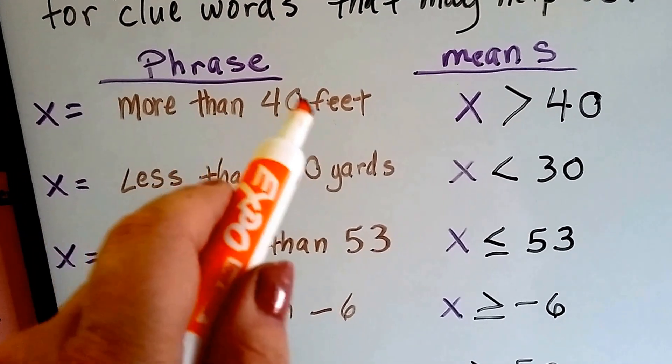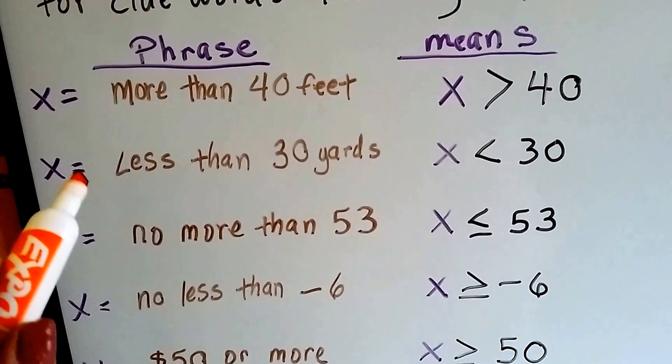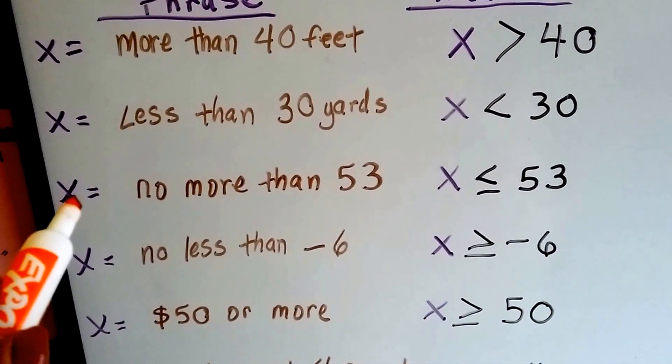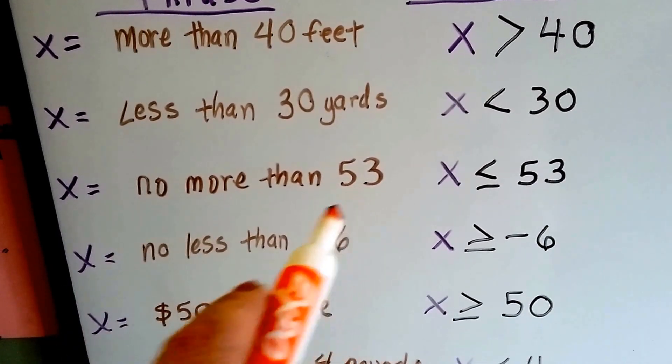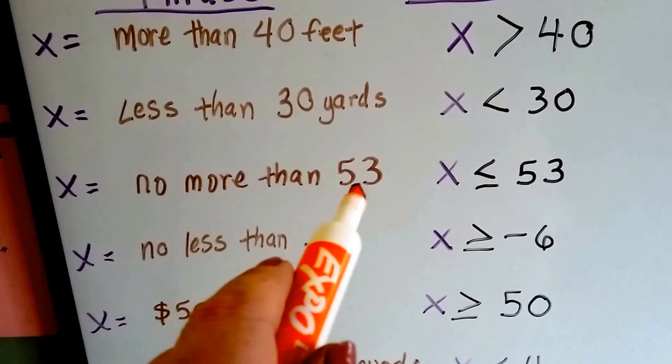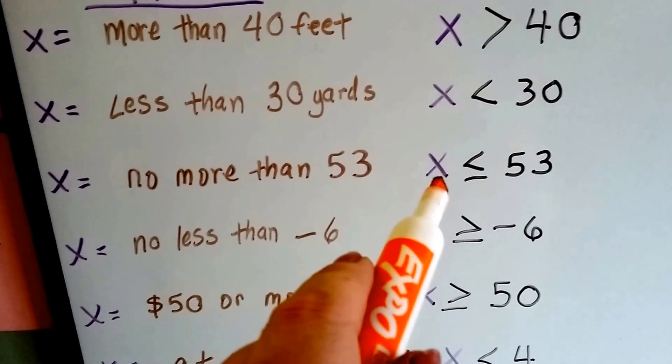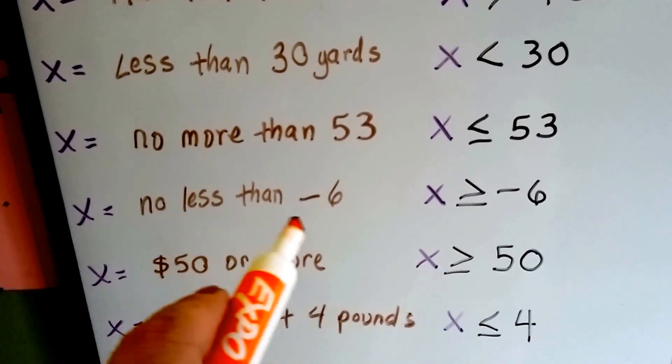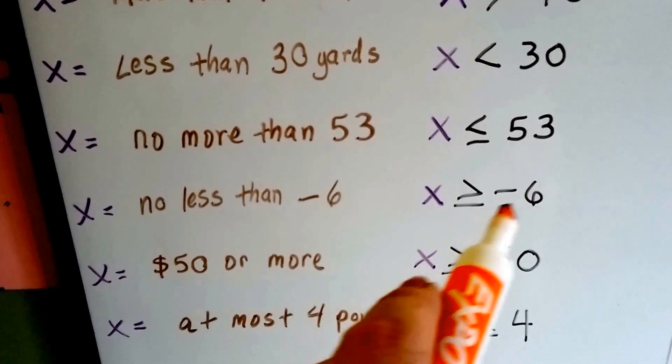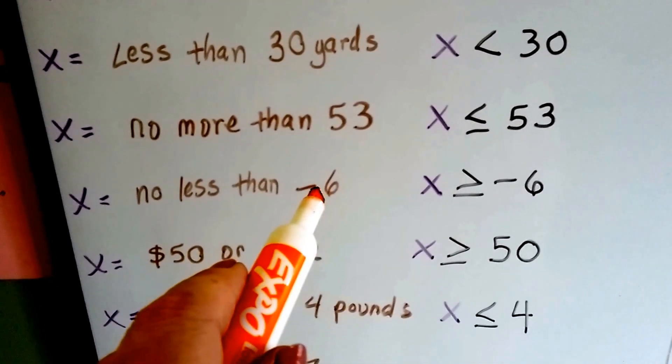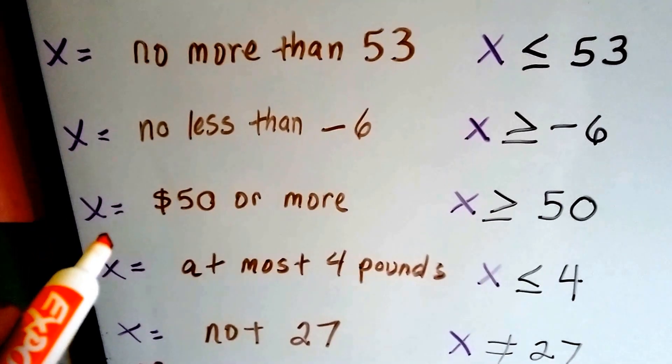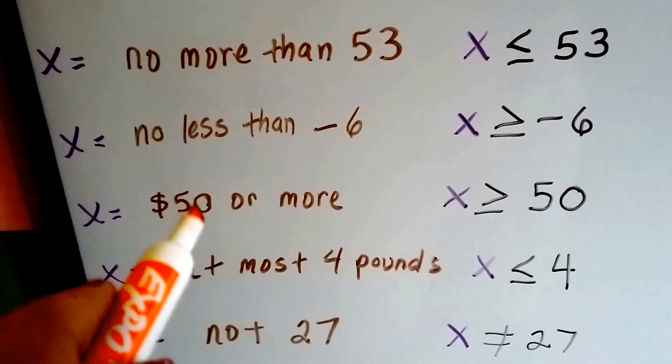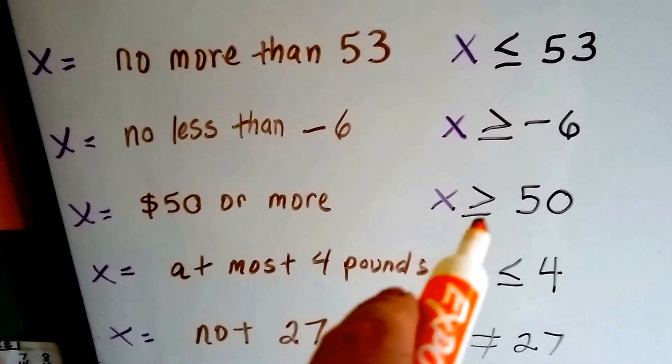If x is more than 40 feet, then x is greater than 40. If x is less than 30 yards, then x is less than 30. If x is no more than 53, well that means it can be 53, it just can't be more than it, right? So it's less than or equal to 53. If x is no less than negative 6, then x is greater than or equal to negative 6. It just can't be less than negative 6. If x is equal to 50 or more, x is greater than or equal to 50.